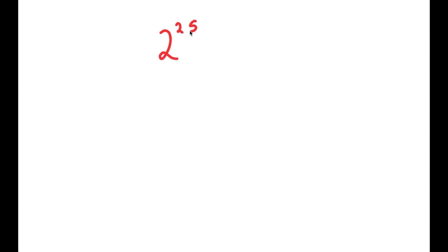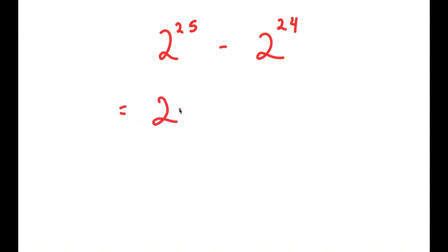Now I'm going to solve the problem 2 to the power of 25 minus 2 to the power of 24. To solve this, I'm going to start by rewriting 2 to the power of 25 as 2 to the power of 24 plus 1, so I have 2 to the power of 24 plus 1 minus 2 to the power of 24.